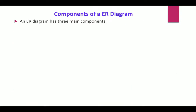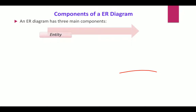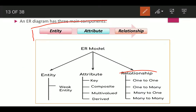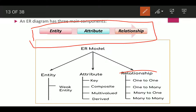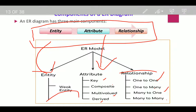There are three main components of an ER diagram: entity, attribute, and relationship. Under entity, there is also the concept of weak entity. Attributes may be key, composite, multi-valued, or derived. Relationships may be one-to-one, one-to-many, many-to-one, or many-to-many. These subdivisions make up the ER diagram.